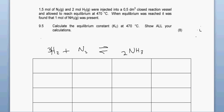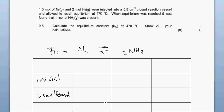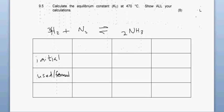The next step is to write our information in the table. The table has three rows: 'Initial' — showing how much of the reactants are given and how much product is present at the start; 'Change' — how much is used or formed; and 'Equilibrium' — what we have remaining at equilibrium.